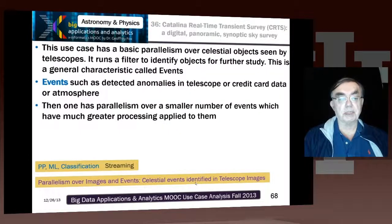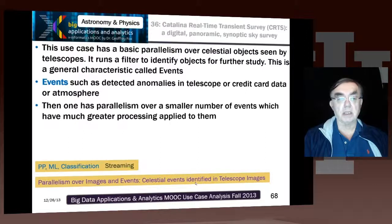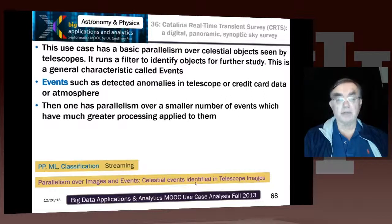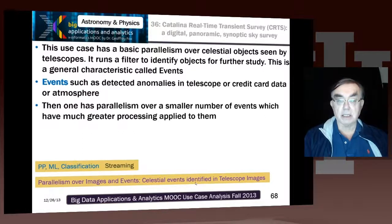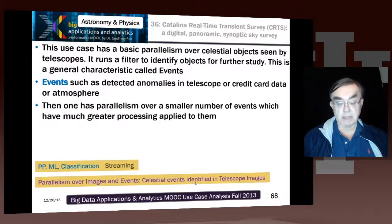This describes the classification of this application. It has basic parallelism over celestial objects, runs filters which are the machine learning for further study, and generates events. Events themselves are parallel because there are a lot of them, though they represent a much smaller number than the original objects. This is a good example of a streaming application — the data is clearly being generated in real time, and it's critical to have classification to identify interesting events, which means classifying all cases where things are changing.